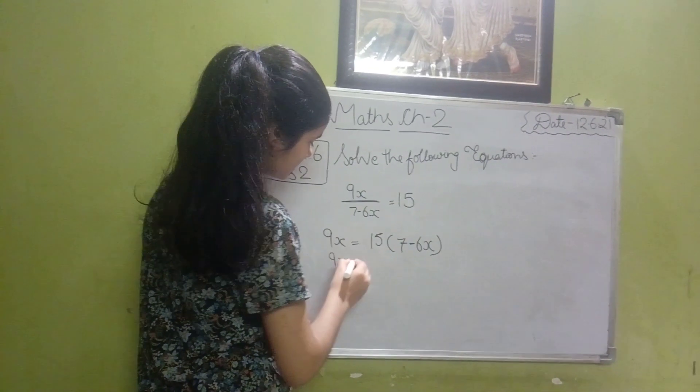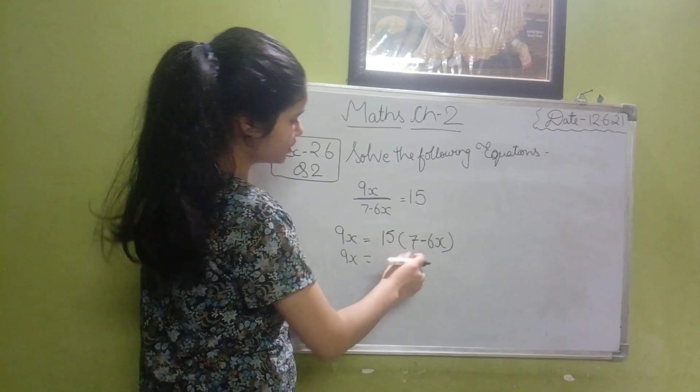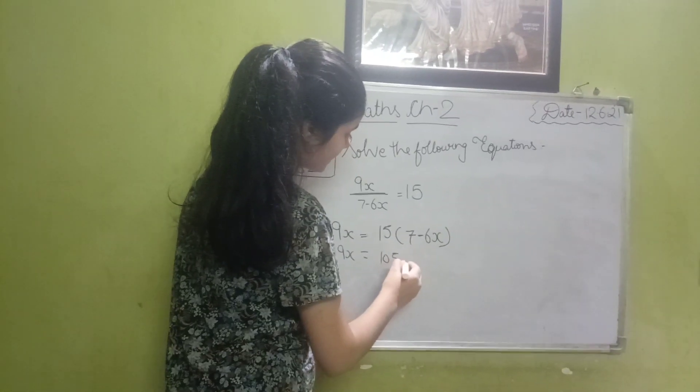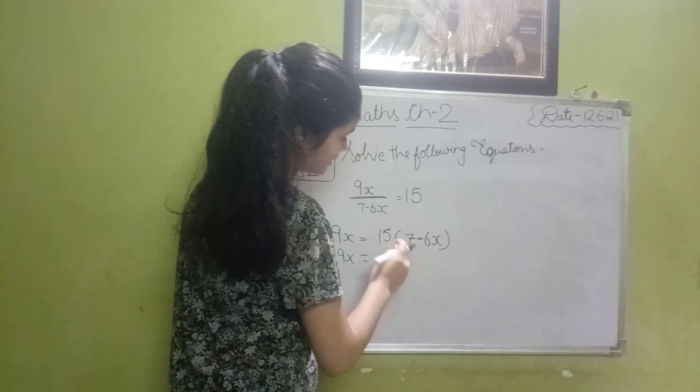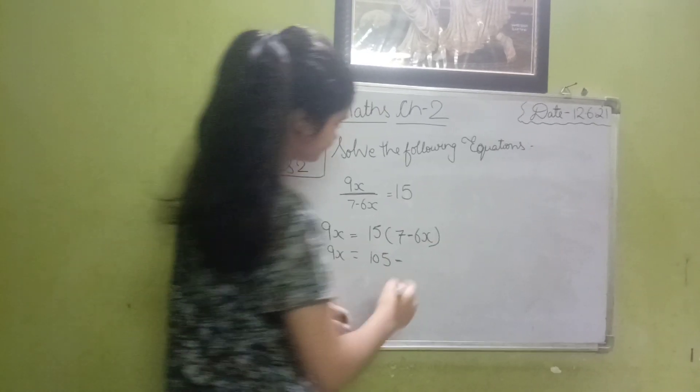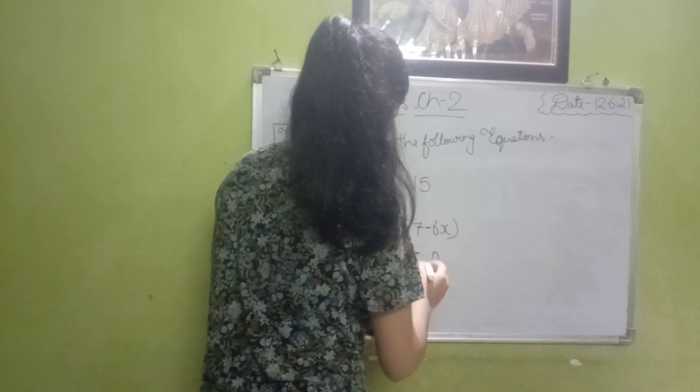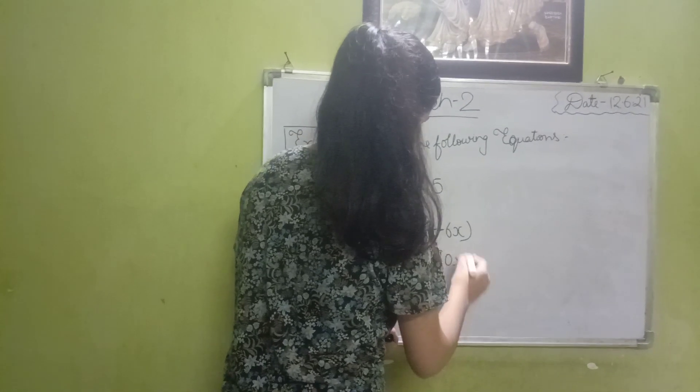9x equals to 15 times 7, 105, plus minus minus gives us plus, so 15 times 6x is 90x. Okay.